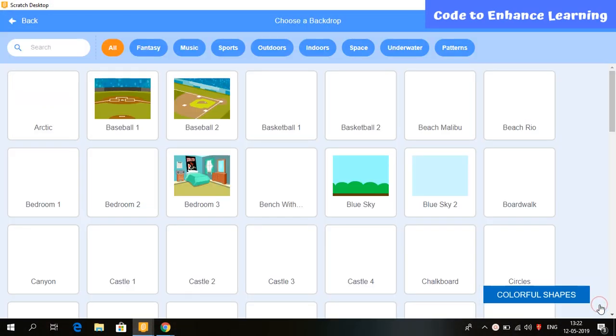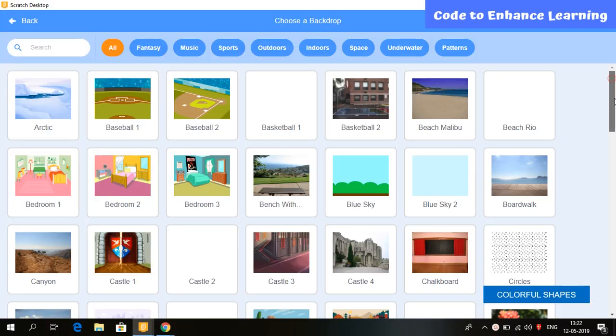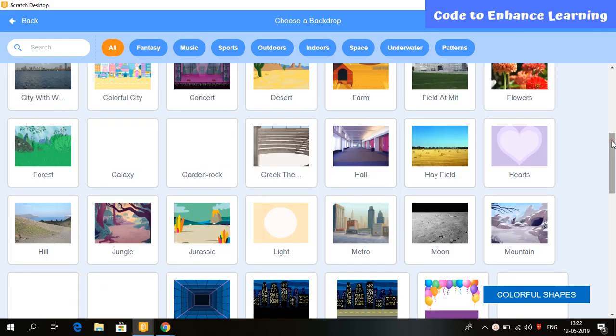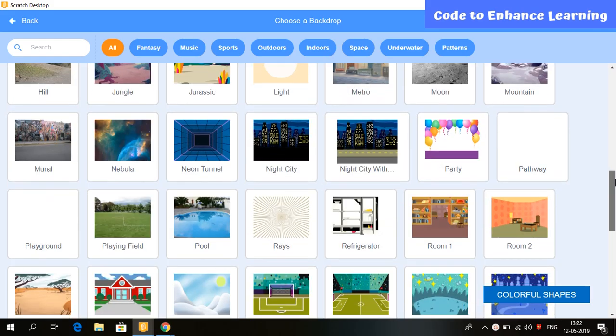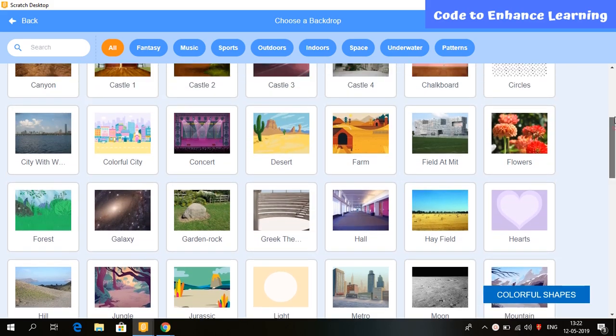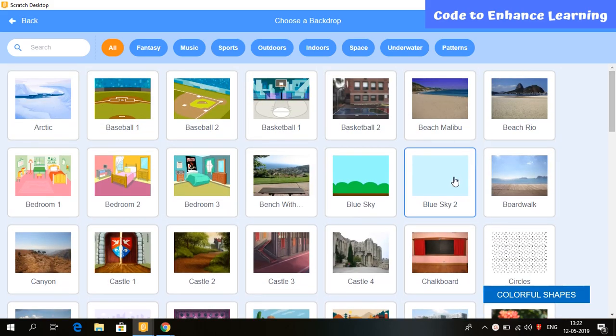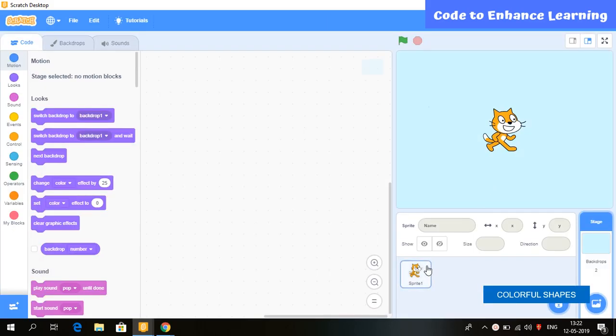Let's start with a backdrop. Here you can see we have many options to select a backdrop. Let's select this one. Now, we are going to delete the default sprite and edit the backdrop.